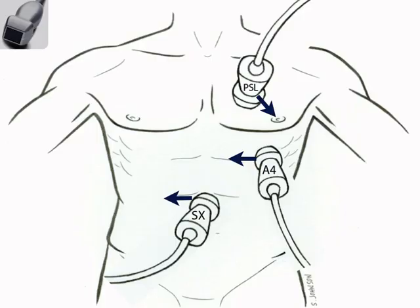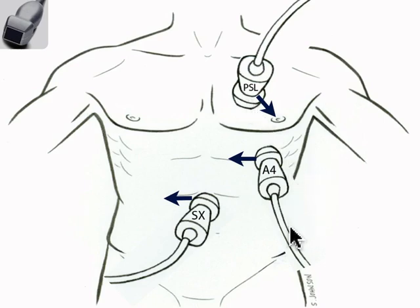Recall that last year we talked about the different locations to point the probe. One way is the parasternal long axis — parasternal, para means next to sternum. You place it right along the edge of the sternum and aim the indicator down towards the patient's left, somewhere between their left elbow or left hip. And then the apical four chamber view where we place the probe right on top of the point of maximal impulse, or PMI, and shoot the sound right down through the apex into the heart with the indicator towards the patient's right.